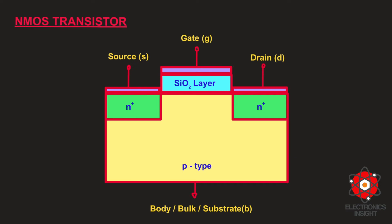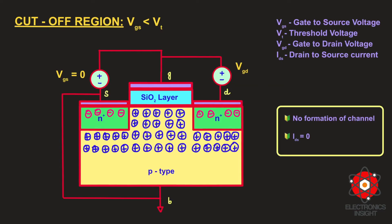Now we will see the different set of voltage conditions in which this NMOS transistor is going to fall under either cutoff, linear, or saturation region. Depending on the values of gate-to-source voltage and the drain-to-source voltage, the MOSFET transistor can operate in three different regions. The first region we are going to concentrate on is the cutoff region.